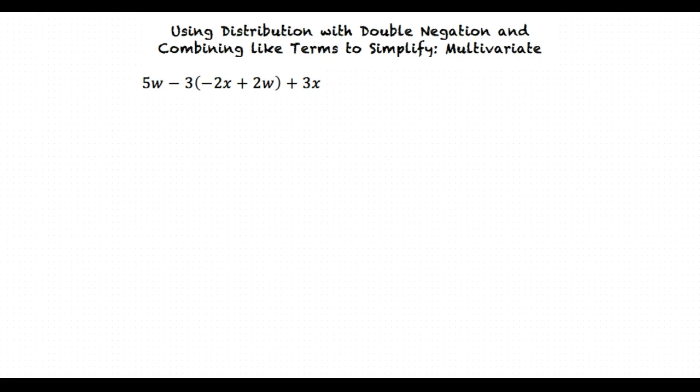To remove the parentheses we will use the distributive property and we get 5w plus 6x minus 6w plus 3x. I don't really understand how to use the distributive property.